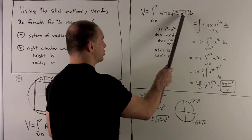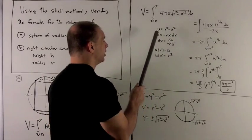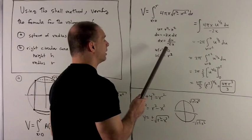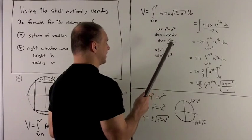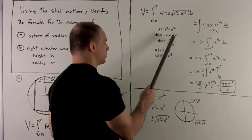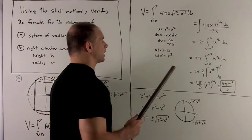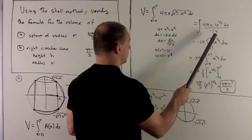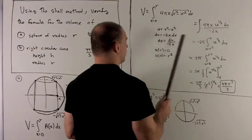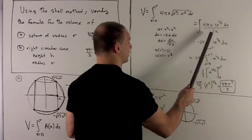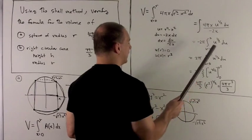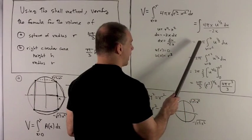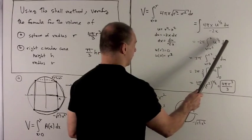Pretty clearly we have a composition, so I'm going to target the inside. u = r² - x², du = -2x dx, and then dx = du/(-2x). I substitute. We'll notice the -2x from the dx substitution lets me cancel out the x's, and I wind up with -2πu^(1/2) du.